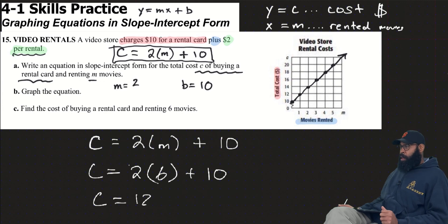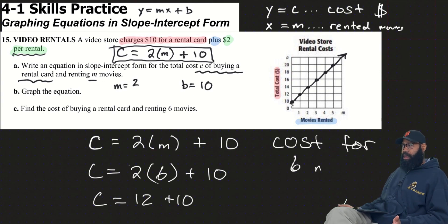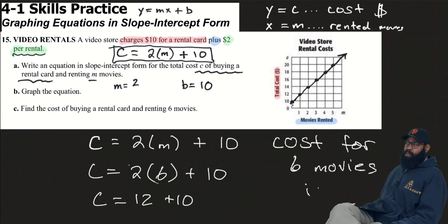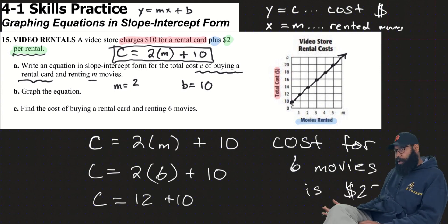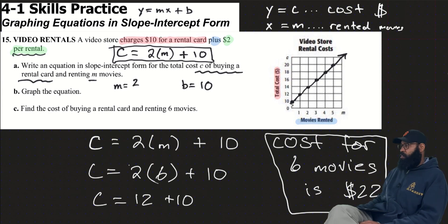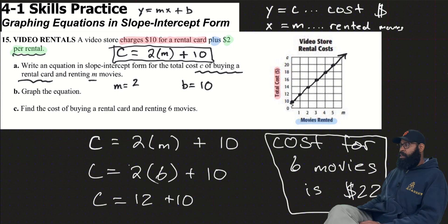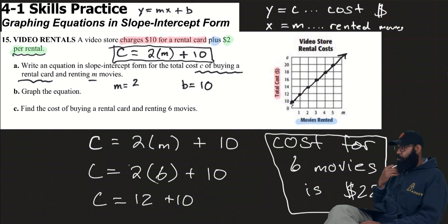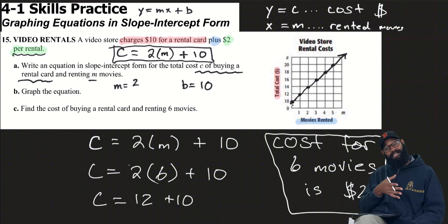Part C: find the cost of buying a rental card and renting 6 movies. Using the equation C equals 2 times M plus 10: C equals 2 times 6 plus 10. 2 times 6 is 12, and 12 plus 10 is 22. So the cost of renting 6 movies is $22.